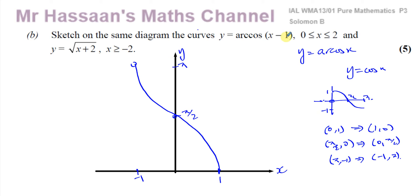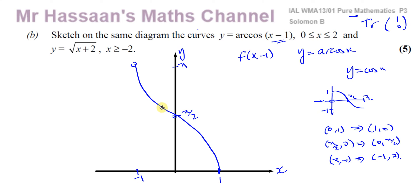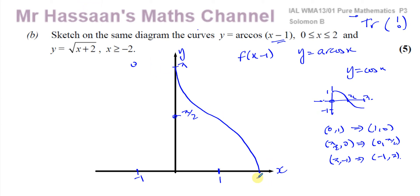But we want to draw arc cosine of (x minus 1), between x equals 0 and x equals 2. Replacing x with (x minus 1) is a transformation - a translation of 1 unit to the right. So every point shifts right by 1: the point (1, 0) goes to (2, 0), and the y-intercept moves to (0, π). So this is now y equals arc cosine of (x minus 1). That's how I dealt with this - first drew y equals arc cosine x, then applied the translation.